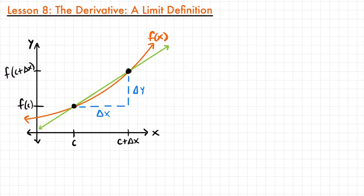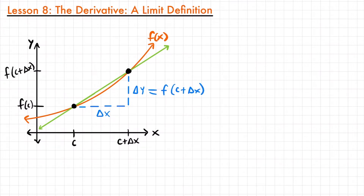Because of that, we also have a change in y. We moved somewhere along the x-axis to get this second point, and because of that we also moved some way along the y-axis. This change in y is equal to the top y-value minus the bottom y-value — just like if one value is 5 and the other is 3, the difference is 2. So delta y equals f(c + Δx) minus f(c), which are our two y-values.